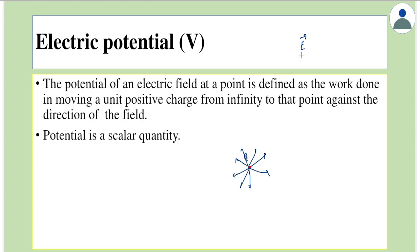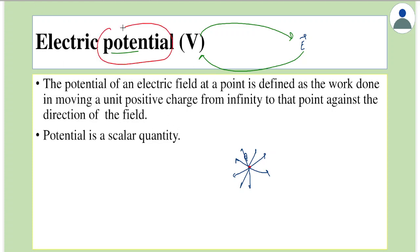That simpler parameter is called electric potential. It gives us information about the charge configuration, and we can always determine the electric field if we know the potential, and vice versa. It is always easier to deal with electric potential because potential is a scalar quantity.